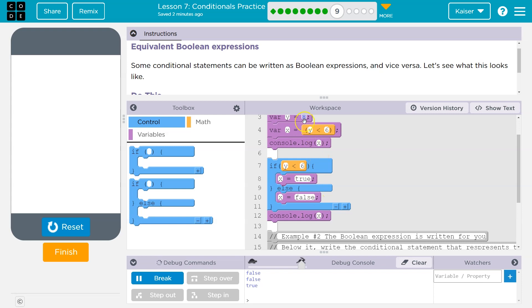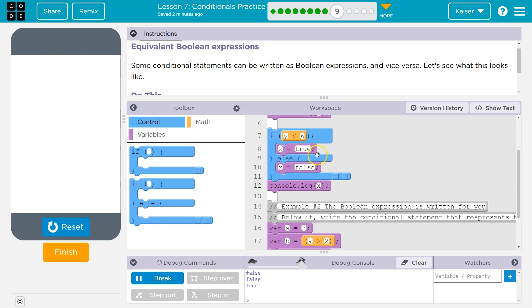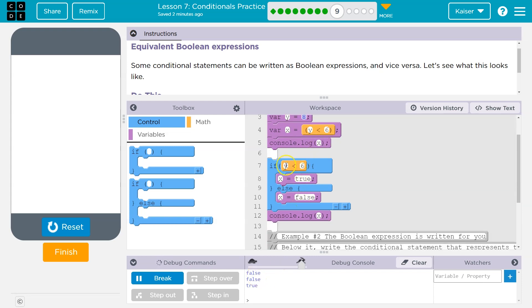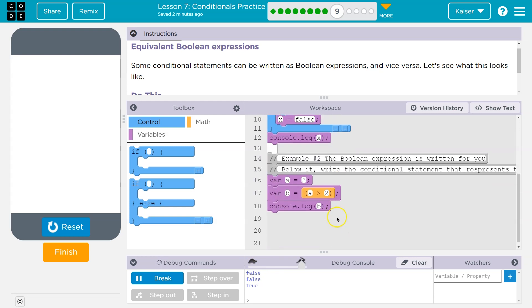So what was y? y is eight. And what's getting printed? Well, y is equal to eight, is y less than six? False. So x is false. Console log false. Then what gets printed? y, eight is less than six, that's false. So we go down to our else, x is false, and we console log false.